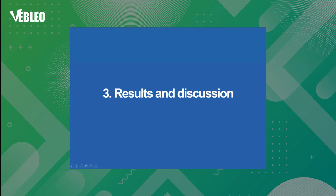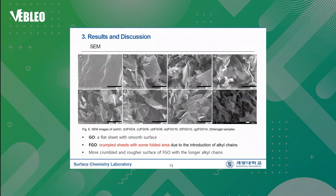Let me talk about the results and discussion. This is a series of SEM images taken for GO and FCO samples. GO shows a flat surface with a smooth surface. FCO shows crumbled sheets with some folded areas due to the introduction of alkyl chains. It showed more crumbled and rougher surface for FCO with longer alkyl chains.